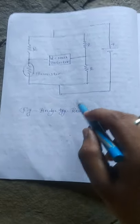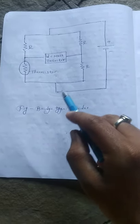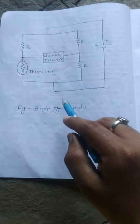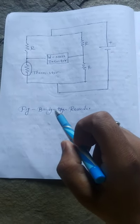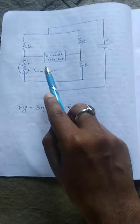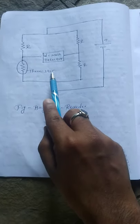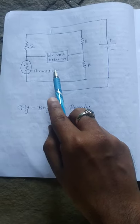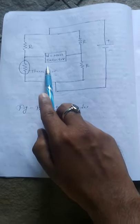This is the diagram of bridge type recorder. Using this diagram, we will discuss the construction and working. First point: thermistors are used as part of the bridge circuit for measurement of temperature. Second point: it converts changes in temperature into variation in resistance by using the thermistor.